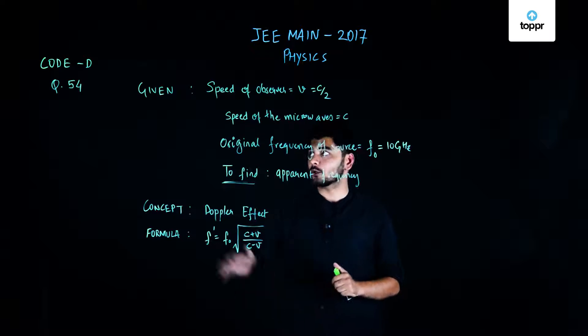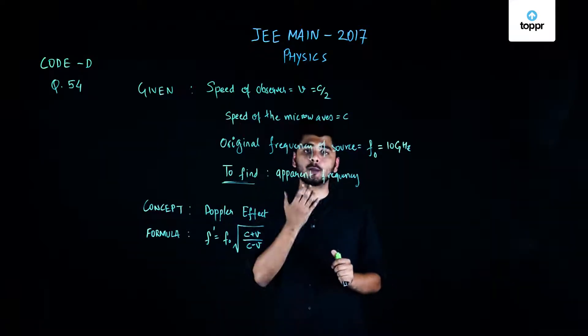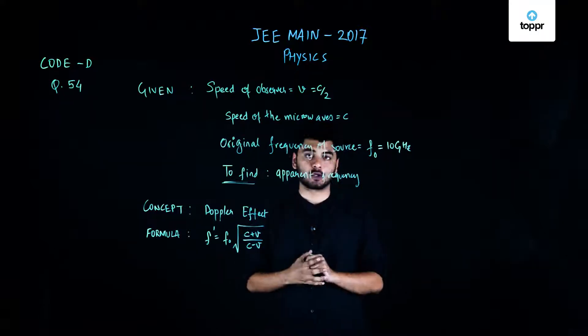Hello students, now we have moved on to question number 54 from set D. In this question, an observer moves with a speed equal to half the speed of light towards a stationary microwave.